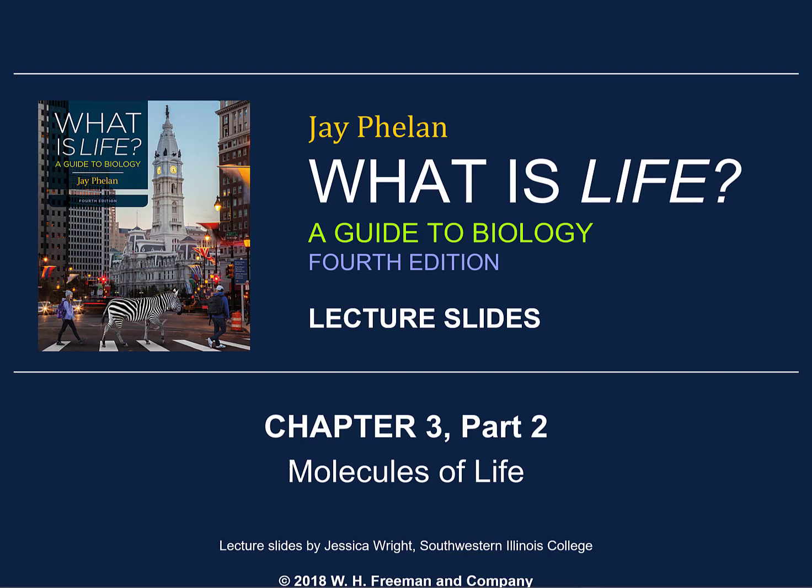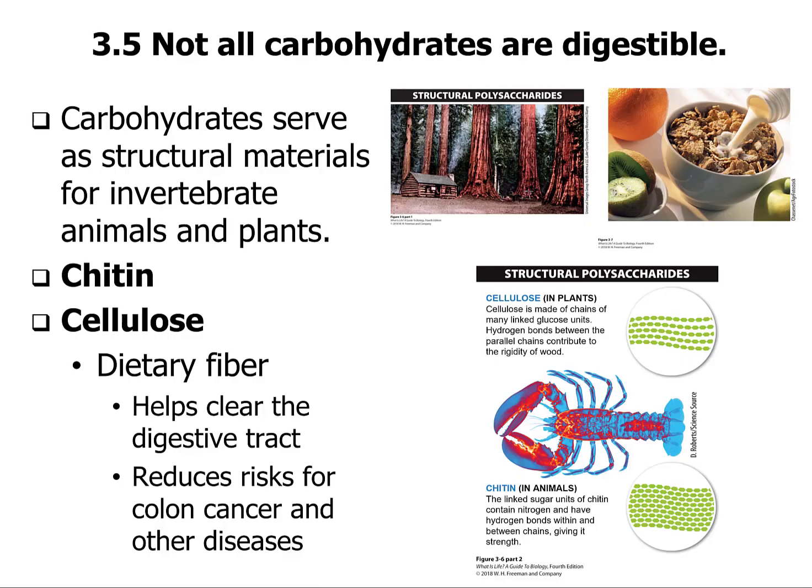Welcome back — Chapter 3, Part 2. We're going to pick up where we left off and discuss the types of carbohydrates that are not digestible. These are the beta-linked ones, not alpha, which are the ones we can break down. This is important — this is the dietary fiber that everyone needs to make sure we don't have a buildup of toxic materials from bacteria that we need to move on.